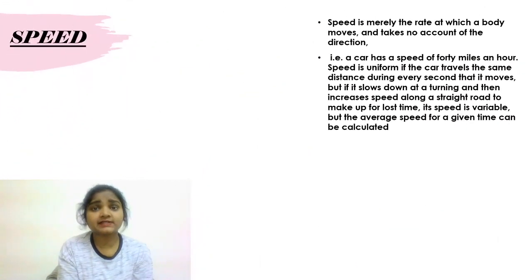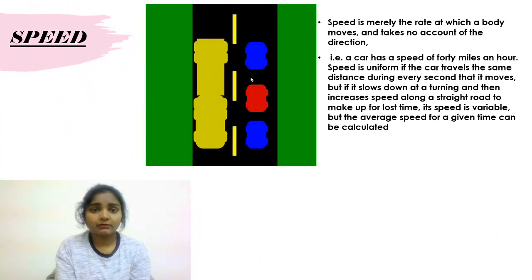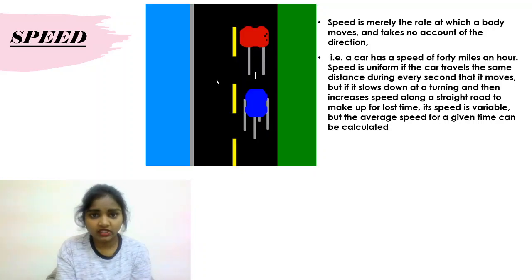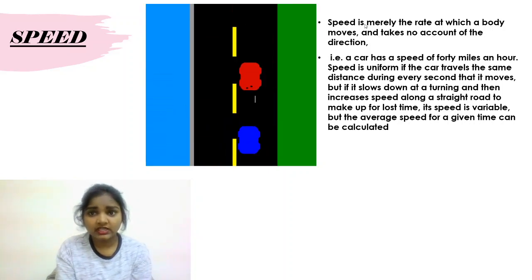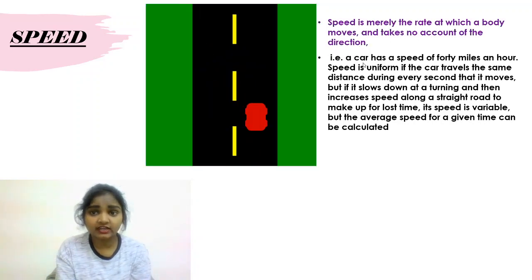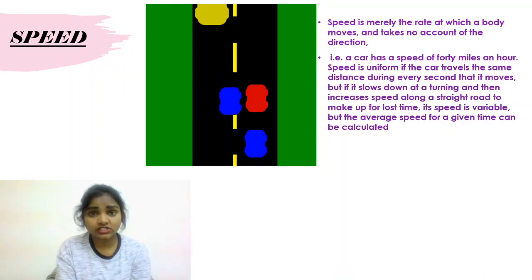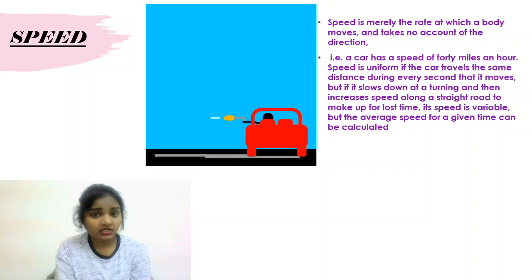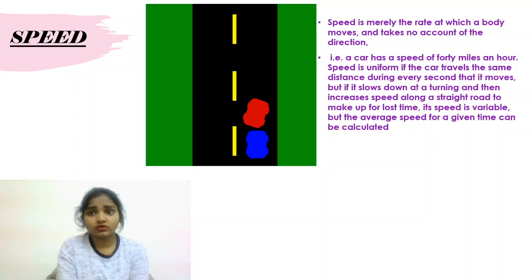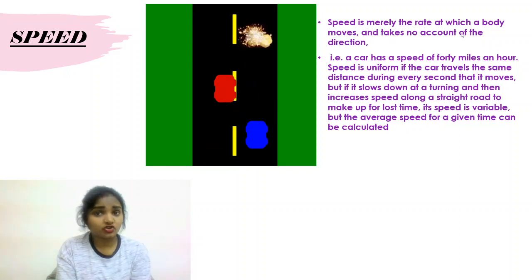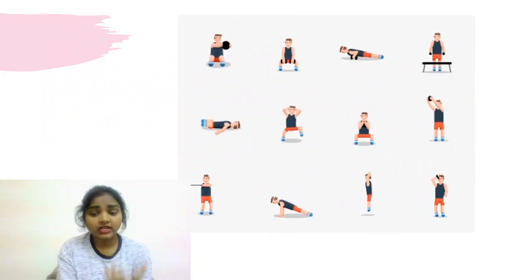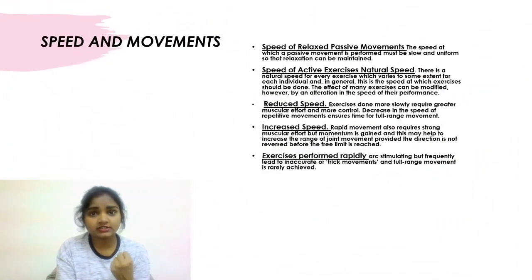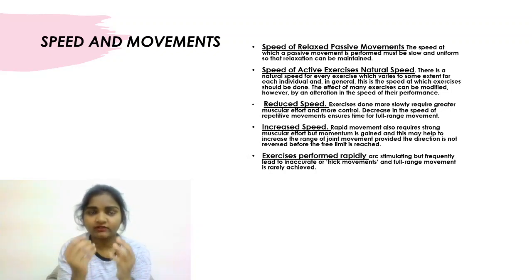Now, what is speed? Imagine a car moving in a zigzag way versus a proper direction. Without a direction, movement is just speed. If it is going with a direction, it is called velocity. Velocity has a direction but speed doesn't — speed just makes a body move and takes no account of direction. Let's see how speed and movements relate to exercises.